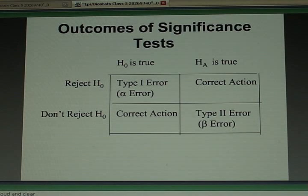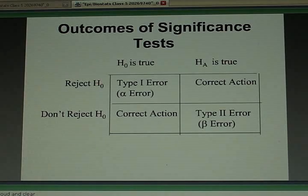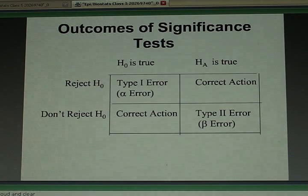What that means is 5% of the time, when you call things statistically significant, you'll be making a mistake. But you're willing to live with that small risk of making a mistake.